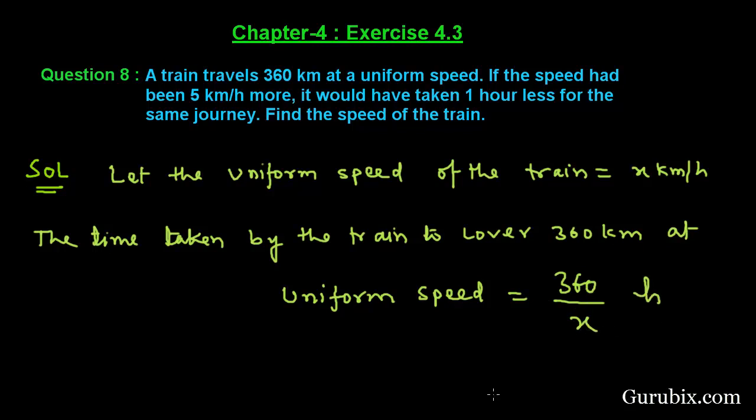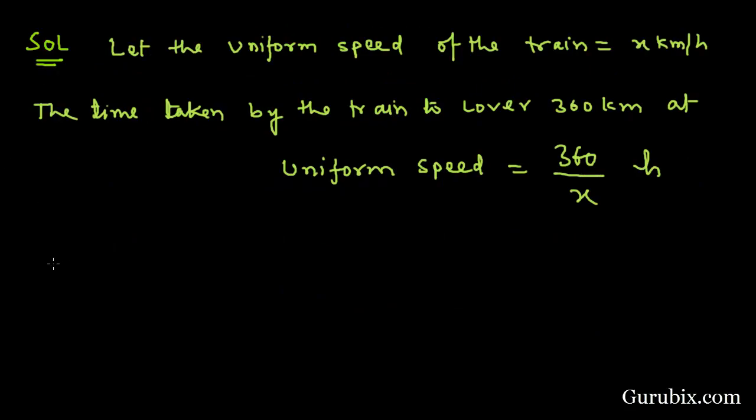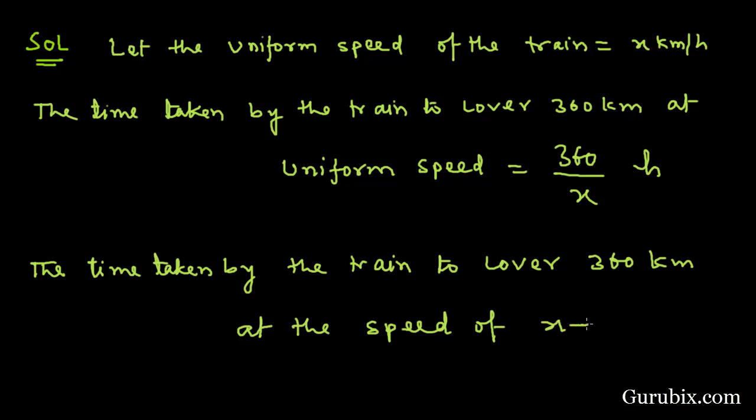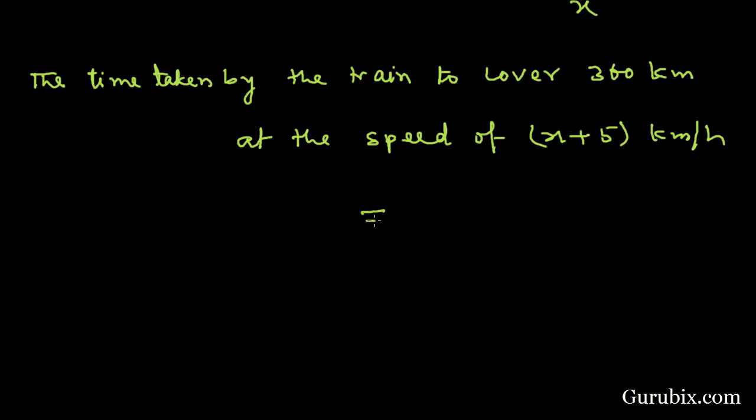equals time. Now we shall find the time taken by the train to cover 360 km at the speed of x plus 5 km per hour, which equals 360 over x plus 5 hours. Now we can form the equation.